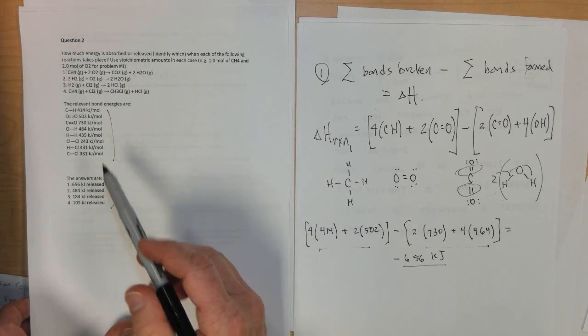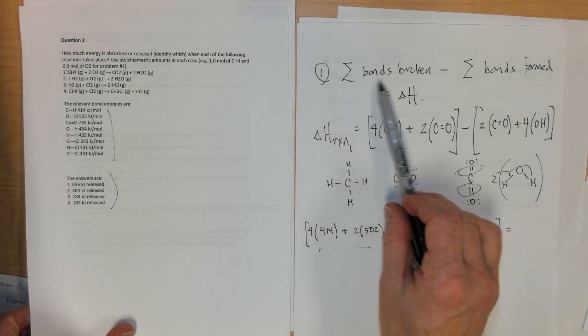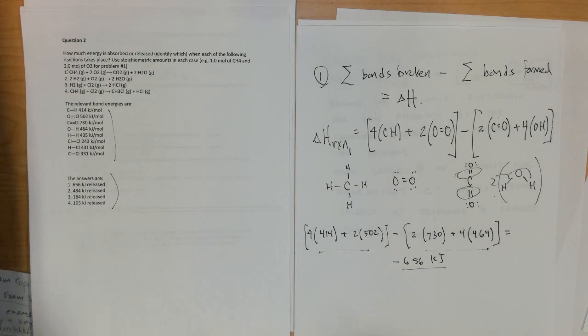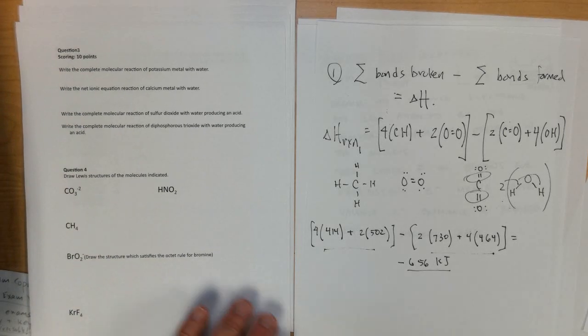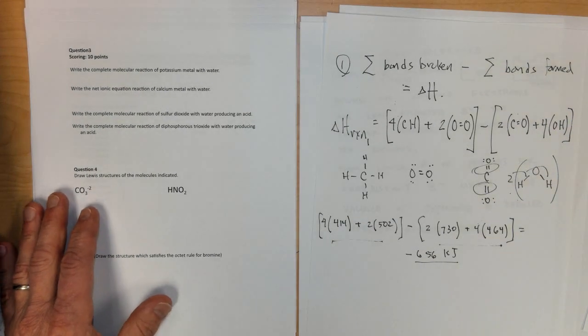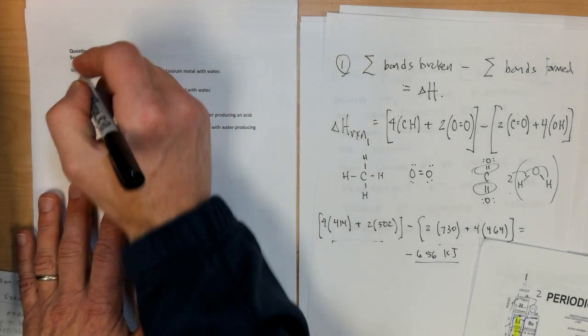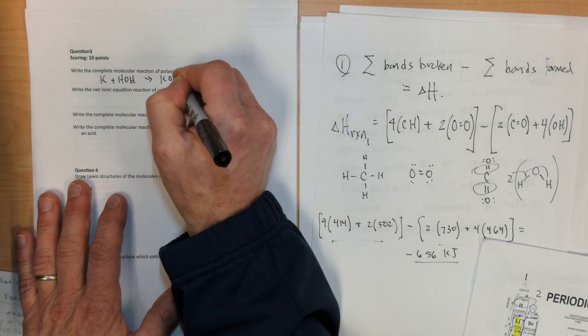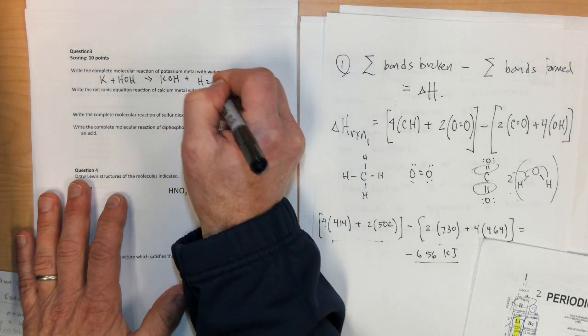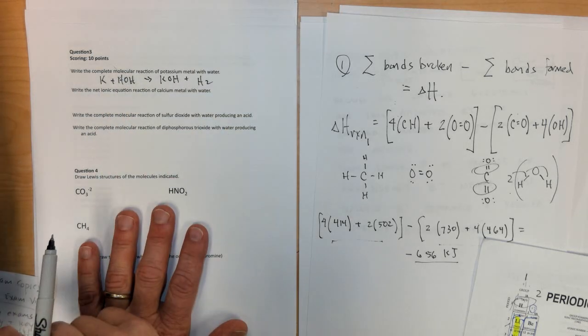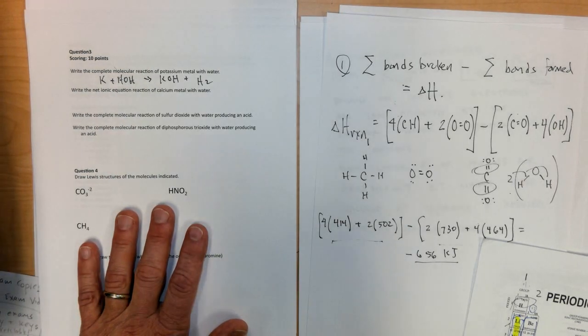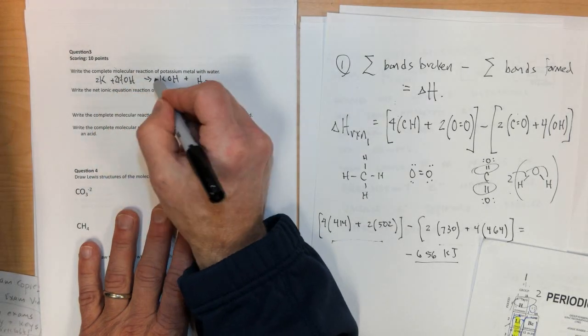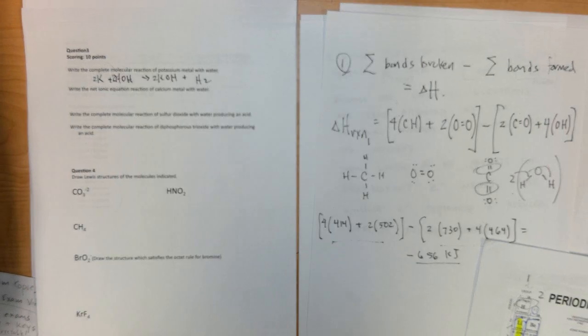Question 2, 3, and 4 follow the same format where you do bonds broken minus bonds formed and the answers are given below. Question 3, write the complete molecular reaction for the reaction of potassium metal with water. Potassium plus HOH means we'll get some potassium hydroxide and we'll get some H2 gas because potassium comes over and replaces the hydrogen. To balance this reaction, I believe we need a 2 here, which means we need a 2 here and a 2 here. And I think we end up with a balanced reaction.